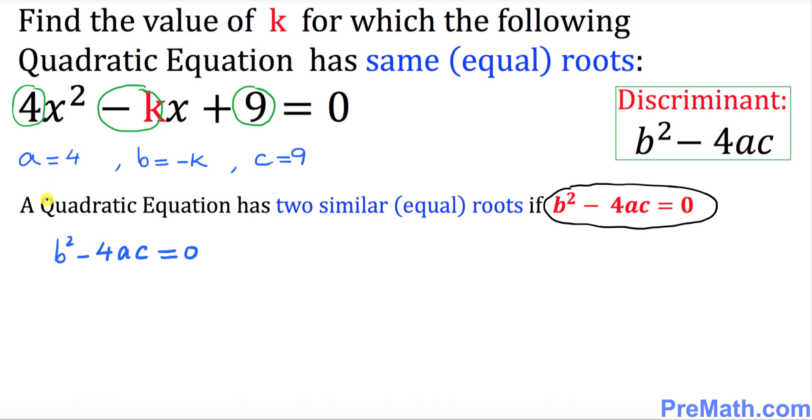Let's replace b, a, and c and just plug in the values. So b in our case is negative k, so that's going to become negative k squared minus 4 times a is 4, and c is 9, equal to zero.